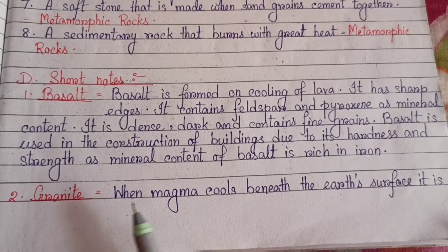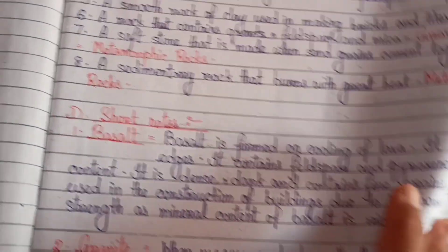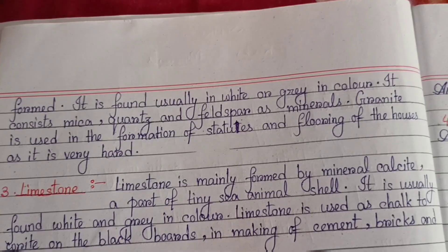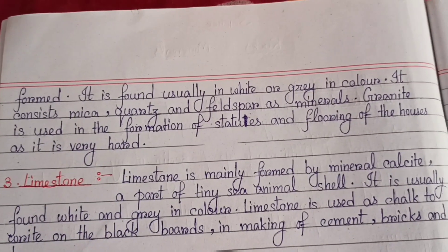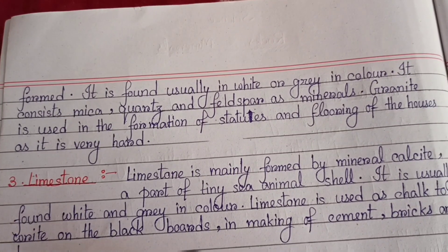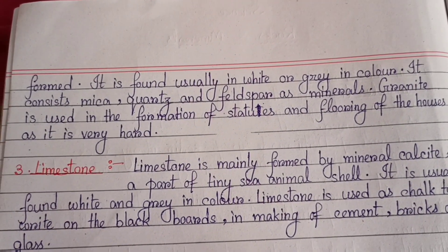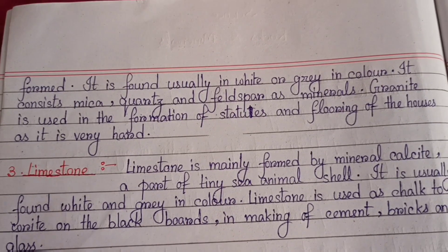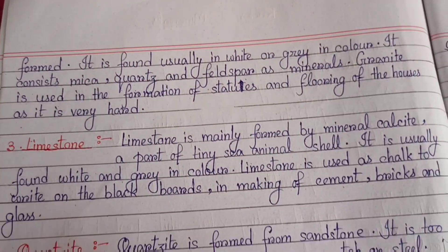Granite — when magma cools beneath the Earth's surface, it is formed. It is usually white and gray in color. It consists of mica, quartz and feldspar as minerals. Granite is used in the formation of statues and flooring of houses as it is very hard.